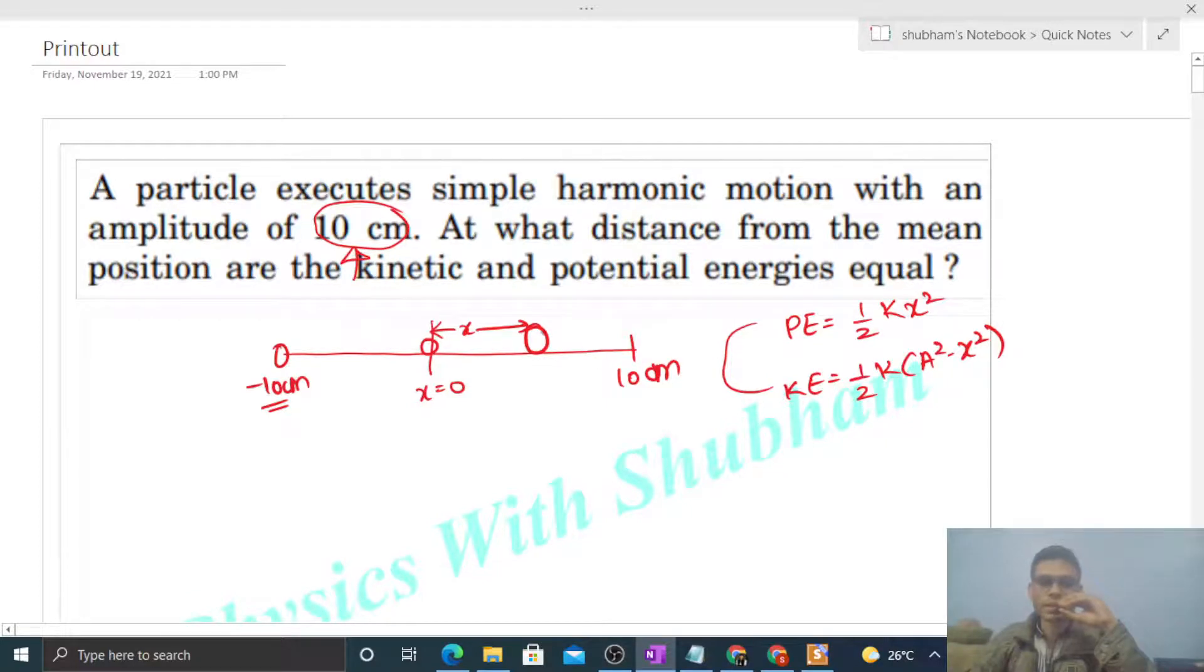When a particle does SHM, then at some distance x from the mean position, potential energy will be this one and kinetic energy will be this one. Now we can equate potential energy and kinetic energy, and from here we can find out the value of x.